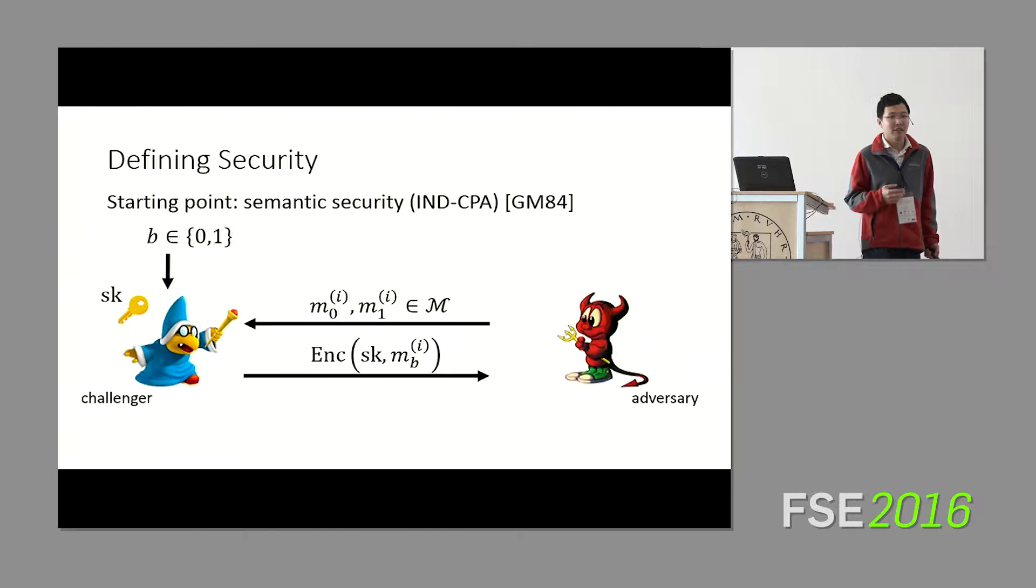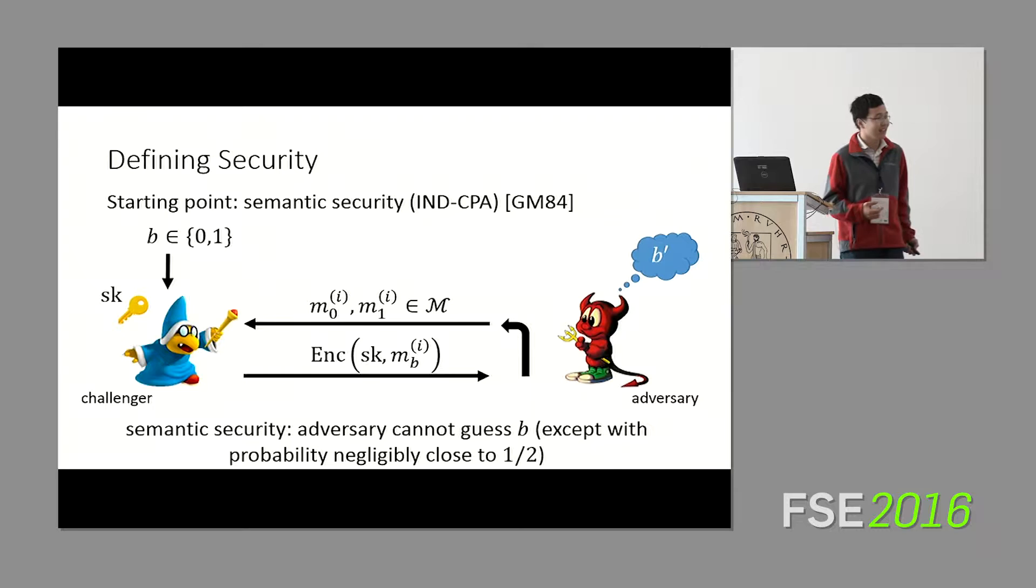The challenger will either give back an encryption of the left message, M0, or an encryption of the right message, M1. The adversary can repeatedly query the challenger. At the end of the game, the adversary needs to guess, is it getting encryptions of the left or encryptions on the right? This notion of semantic security says that no efficient adversary is able to figure out whether it's getting encryptions of left messages or right messages.